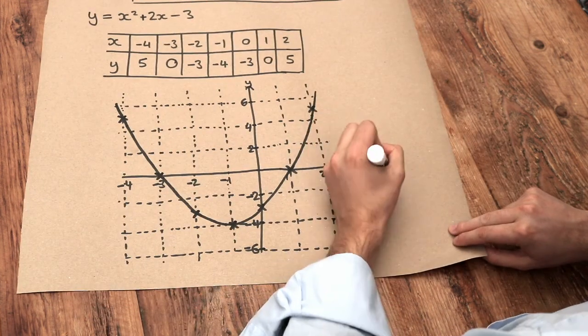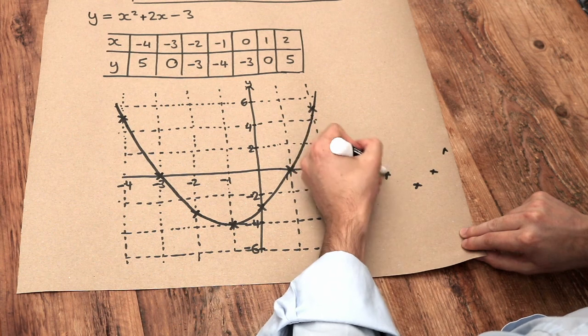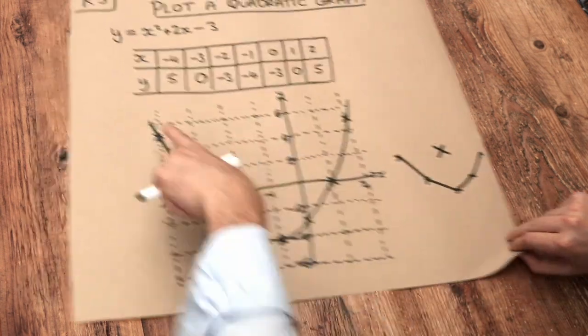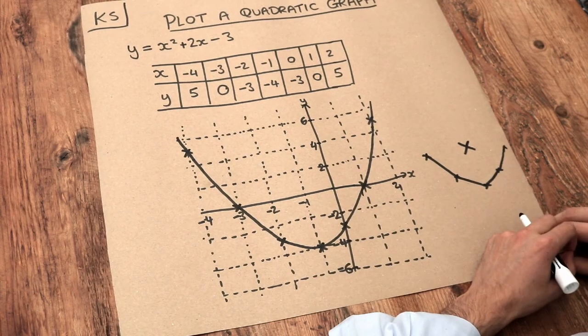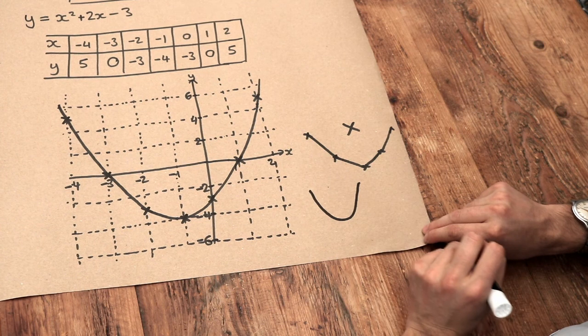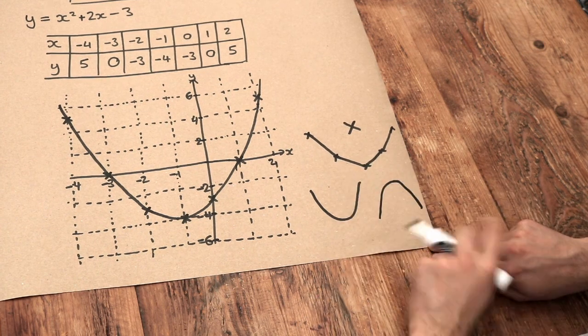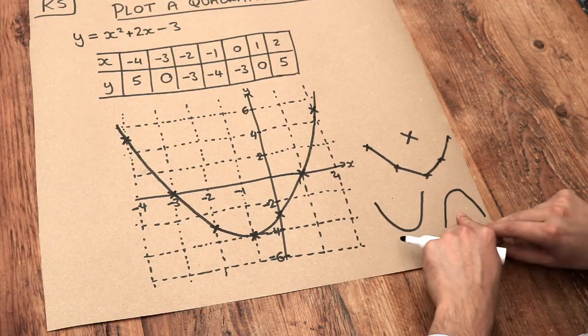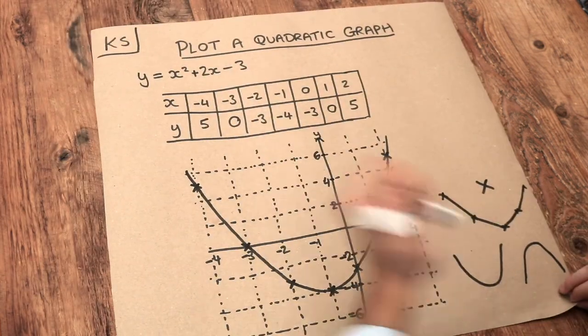So just to reiterate, if your points are like this, do not join them with straight lines. Join them with a nice smooth curve like that. And quadratic graphs are either this U shape, so a smiley face shape, or a kind of frowny face shape. So they're either U shape or an n shape like that. If you don't get one of these shapes and you have a quadratic equation, then you've gone wrong.